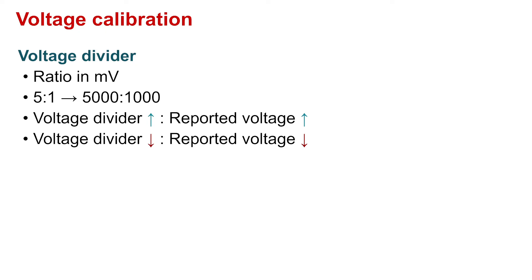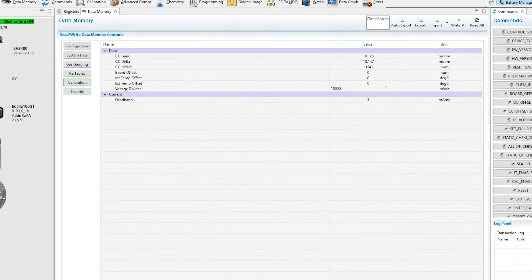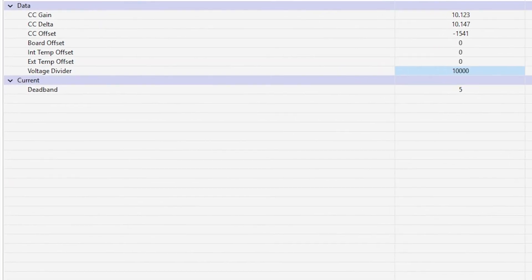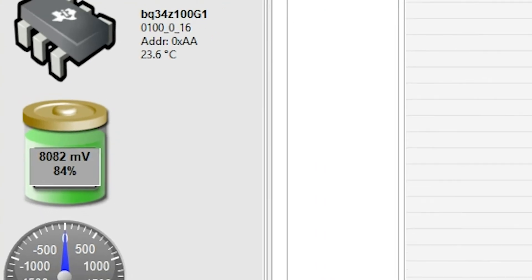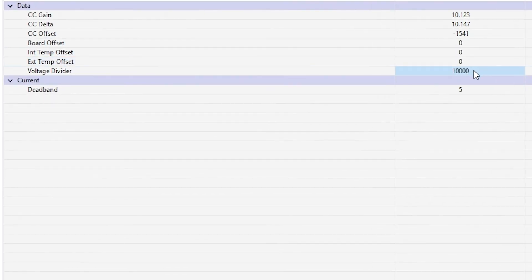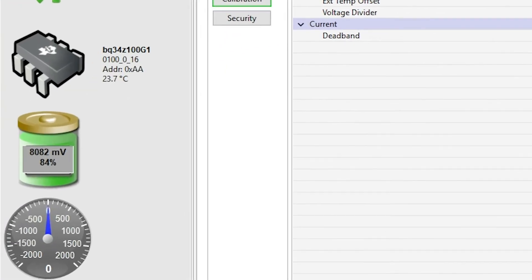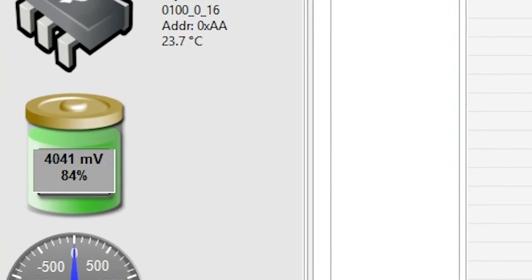We calibrate the voltage for the device by increasing or decreasing the voltage divider ratio until the reported voltage matches the actual voltage. For example, with the voltage divider set to 10000mV, the reported voltage is 8082mV. Decreasing the voltage of the voltage divider to 5000mV results in a decrease of voltage reported by the gauge from 8082mV to 4041mV.